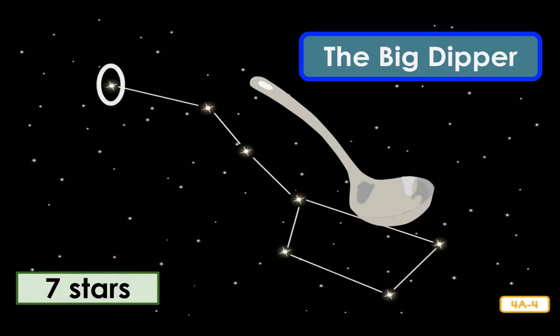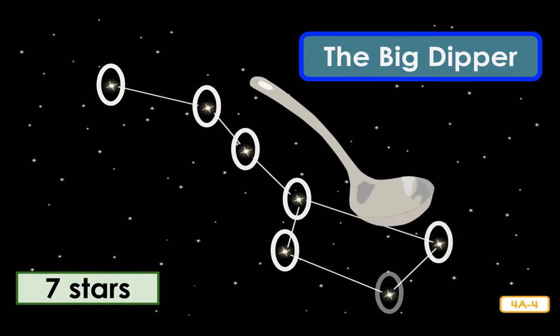The Big Dipper looks different in the sky depending on the time of the year. Sometimes the Big Dipper looks right side up, sometimes it looks upside down, and sometimes it appears to be standing on its handle. That is not because the Big Dipper moves, but because the Earth is rotating on its axis and orbiting around the sun.